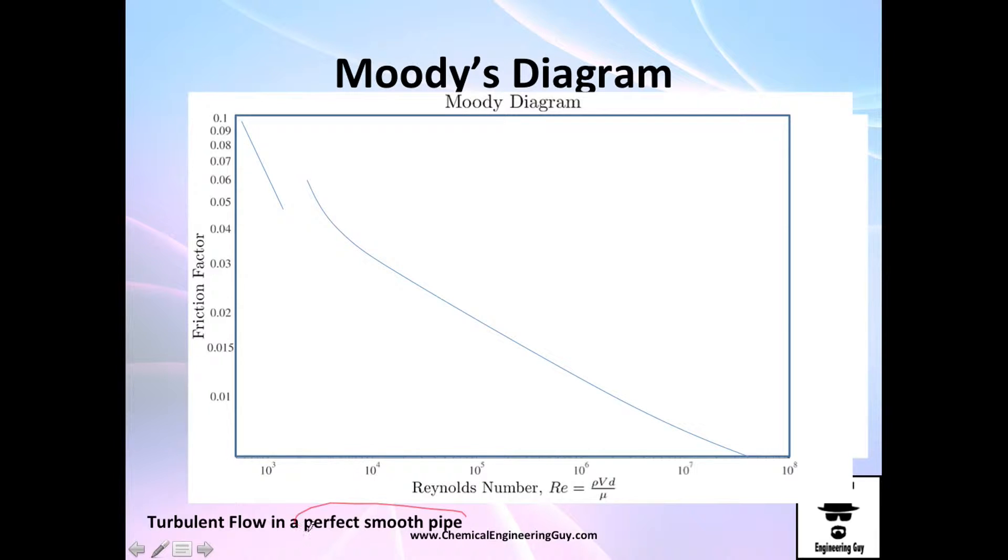This was done with a perfect smooth pipe. You get this value which will be constant because it's perfectly smooth and the diameter will be constant. As you can see, this is a function of Reynolds and friction factor. More friction factor, more roughness. More Reynolds number, less friction factor.